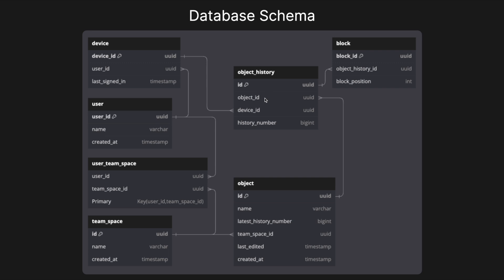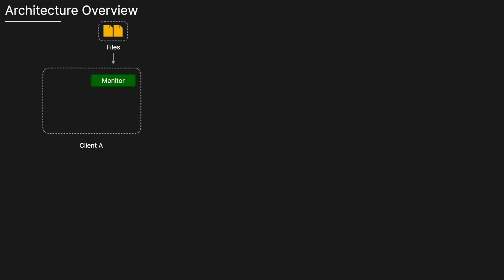To support versioning, we have an Object History table, which represents a file at a point in time. It has an ID, a reference to the object ID, a device ID (one-to-many), and a history number indicating where in the file history it belongs. The latest history number on the Object lets us always know the current version. We also have a Block table in a one-to-many relationship with Object History, where each history is made up of several blocks, and each block has a position so we know exactly where to place it when reconstructing the file.